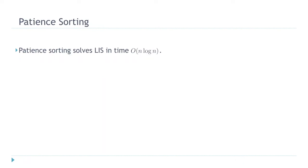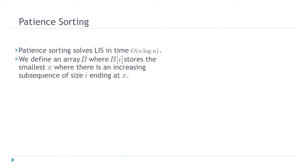There's a famous solution for LIS which is actually very simple, it's called patient sorting, which solves the LIS in time n log n. In this solution we introduce an array, I'm going to denote it by B — this is going to be the solution array for us. This array is designed in a way that B of i, or the i-th element of the array, gives us the smallest x such that there is an increasing subsequence of size i ending at x.